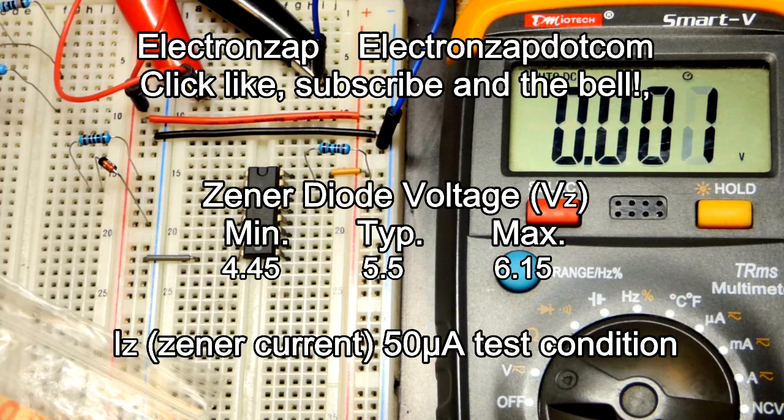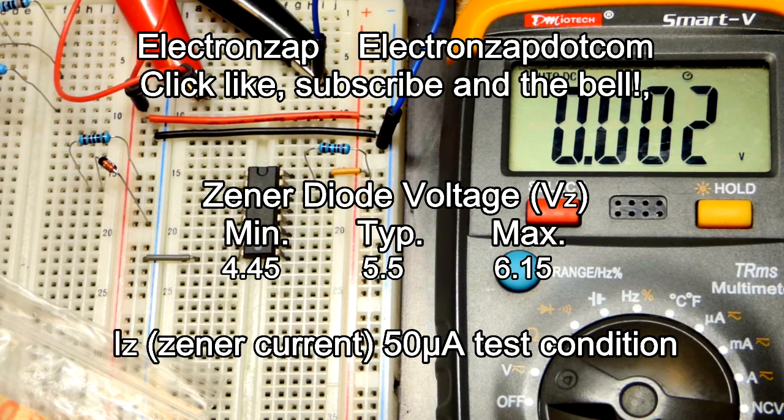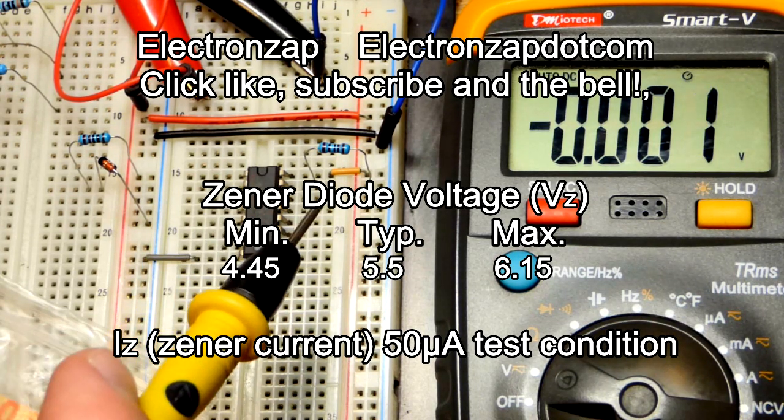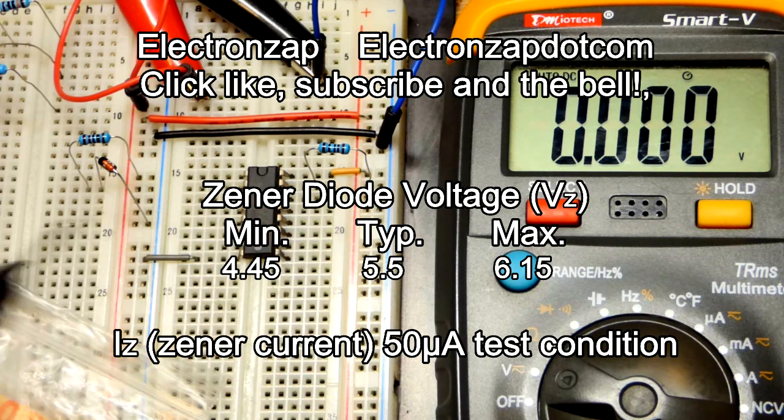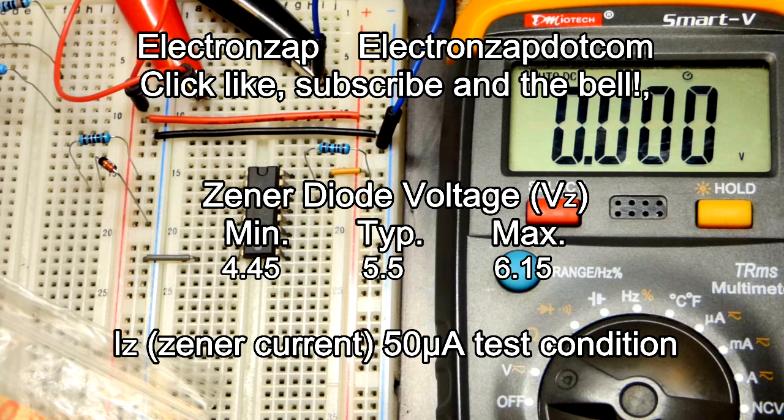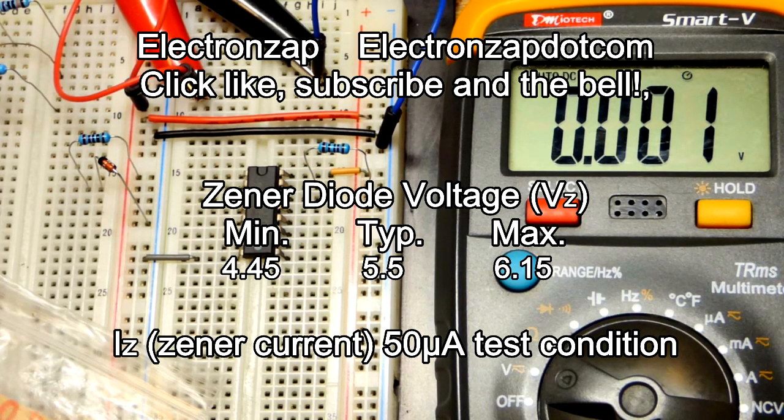At the top it just says in summary 5.2 volt zener. At the bottom it has the zener diode voltage which is V sub Z - there's a little Z after the V to indicate zener voltage. If you look in the datasheet, it says it could be a minimum of 4.45, typically 5.5, or a maximum of 6.15.